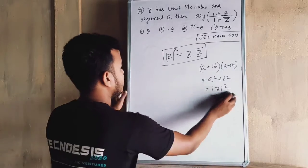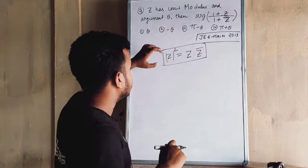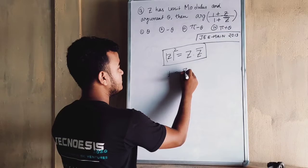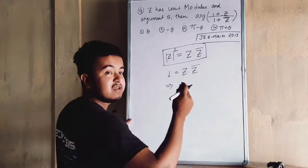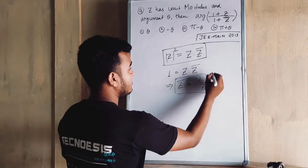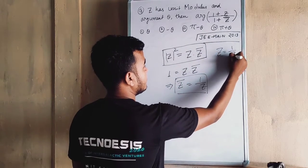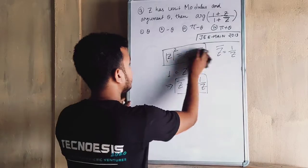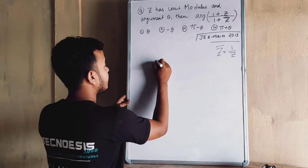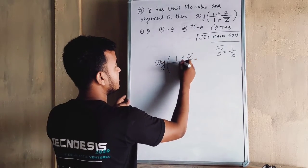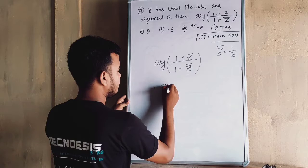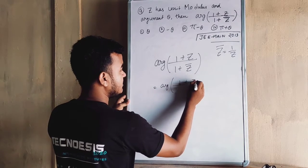Since the modulus of Z is unit modulus, we have 1 equals Z into Z-bar. From this we can conclude that Z-bar equals 1 by Z. Now, to solve the question: the argument of (1 + Z) over (1 + Z-bar) — substituting Z-bar equals 1 by Z — gives the argument of (1 + Z) over (1 + 1/Z).